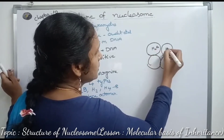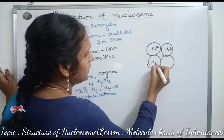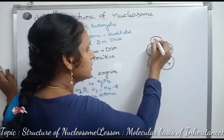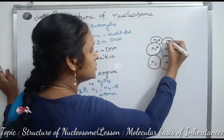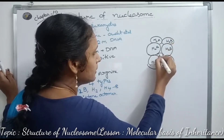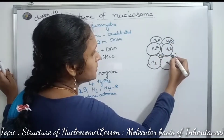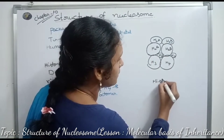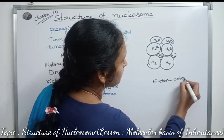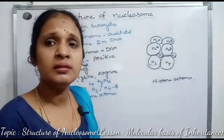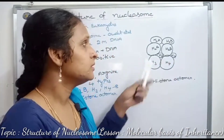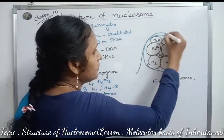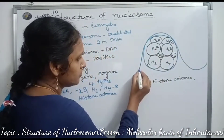The histone octamer is composed of H2A, H2A, H2B, H2B, H3, H3, H4, H4 — totally 8 histone proteins forming the histone octamer. These histone proteins are positively charged, and the negatively charged DNA wraps around the positively charged histone octamer.